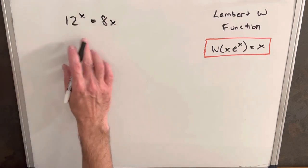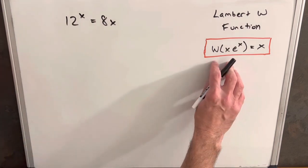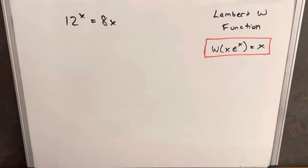We have this problem, 12 to the x equals 8x. I'm going to try to solve this by Lambert W function. We want to utilize this little formula we have here on the right, Lambert W of x times e to the x equals x.